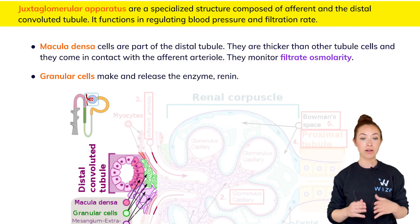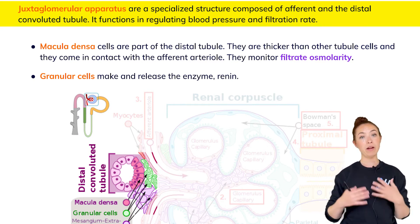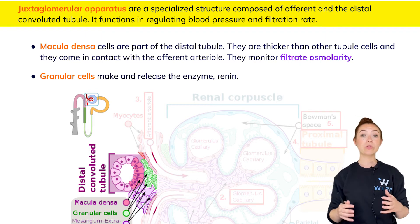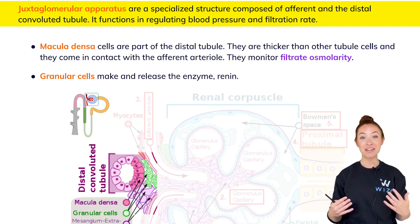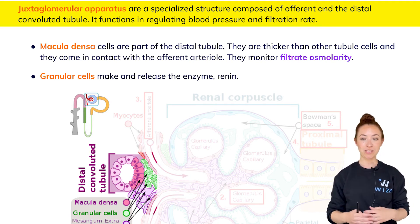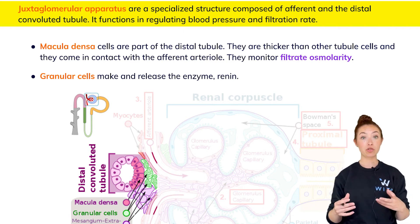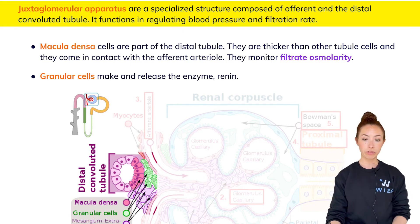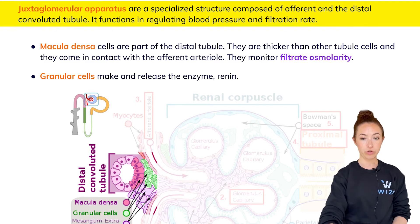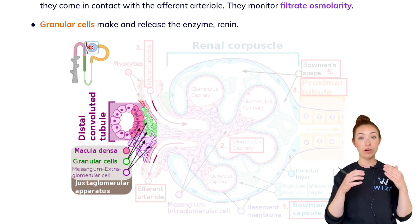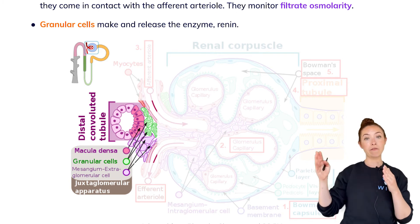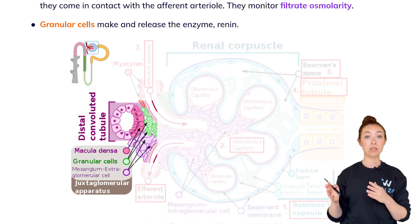There are a few more cell types worth mentioning — not as high yield for the MCAT, but important nonetheless: the cells of the juxtaglomerular apparatus, or JG apparatus. It is a specialized structure composed of a few different things. The nephron has a portion far from the glomerulus called the distal convoluted tubule.